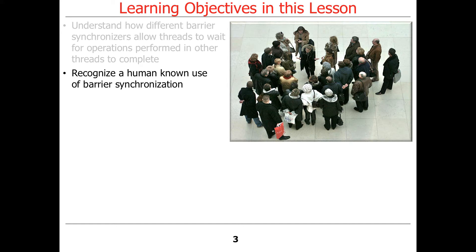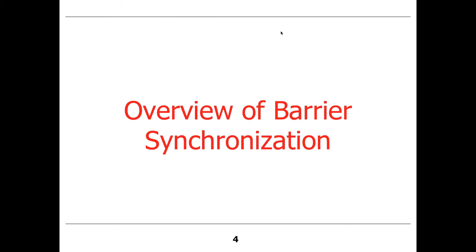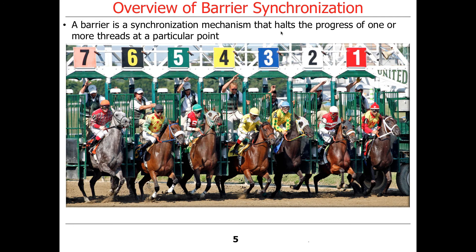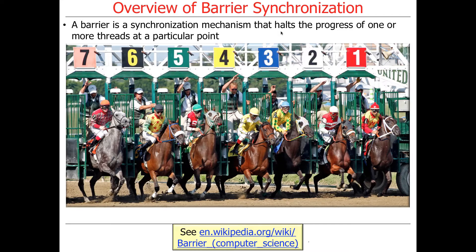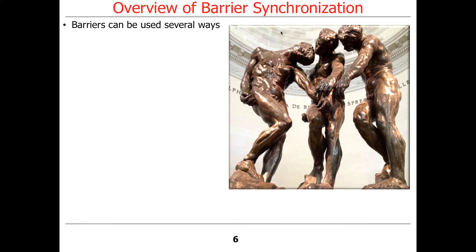We'll also discuss a well-known analogy for barrier synchronization that's easy to remember. A barrier is a synchronization mechanism that halts the progress of one or more threads at a particular point. Note that if you look up 'barrier' on Wikipedia, you'll find a discussion of memory barriers, which are not quite the same thing — a memory barrier is used to flush caches to ensure memory is properly visible. We're using barrier synchronization at a higher level of abstraction to coordinate the operations of multiple threads.